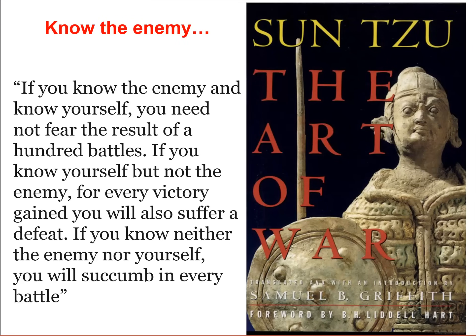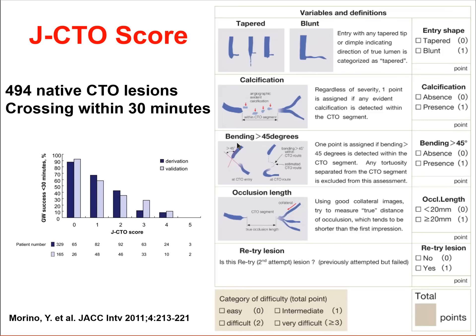The analysis of the angiogram is critically important for being successful in CTO intervention because, as in war, it is very important to know and understand the enemy as well as yourself if you need to win several battles. What are the elements of the angiogram that are important to look at? Let's first look at the JCTO score, one score that uses four angiographic parameters to predict the difficulty of crossing the lesion.